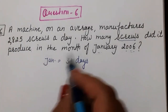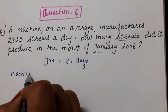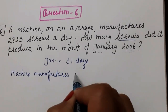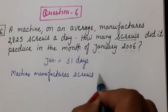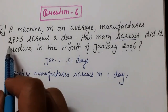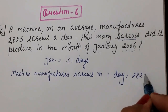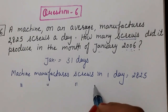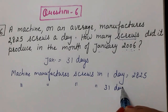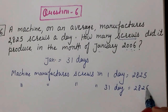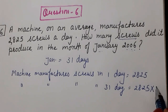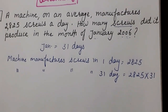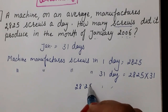So the machine manufactures 2,825 screws in one day. We need to find how many screws it produces in January, i.e., in 31 days. Since we are given one day's production and need to find more days' production, we multiply. So we multiply 2,825 by 31.